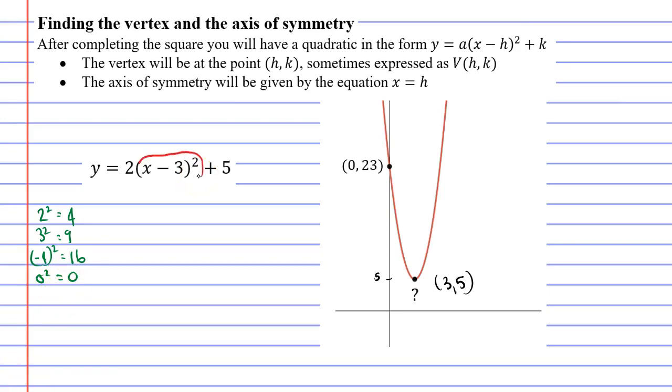So if we look at this part of the function, we can see that we're squaring something. So the smallest answer we can possibly get is 0. Now when you take 2, multiply it by 0 and add 5, you get a solution of 5, meaning that the smallest solution we can get for this function is 5, hence why the graph has a lowest point at y equals 5. So that explains why this part of the function, the plus 5, gives you the y value for your vertex.